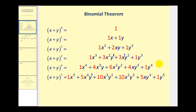Next, in red, we have these coefficients that we found last time using Pascal's triangle, but now we'll take a look at how we can find them using combinations. Let's go and take a look at the binomial theorem.